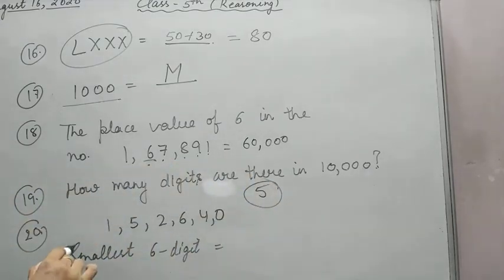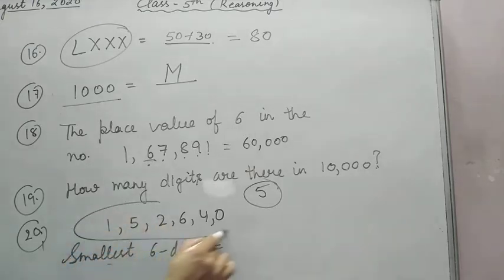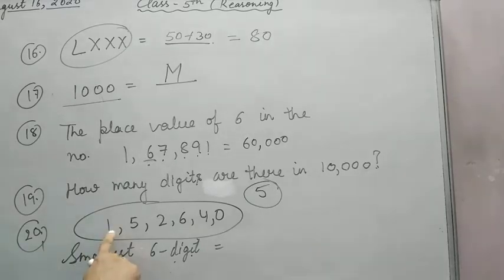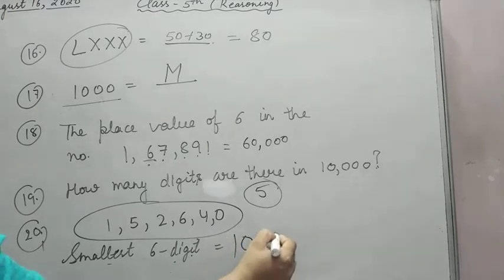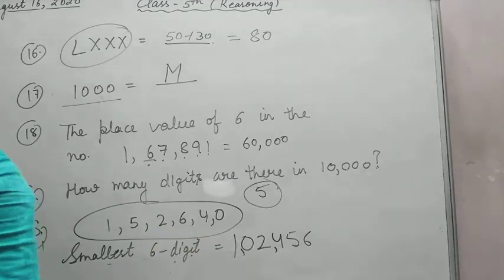Question 20: You have to make the smallest six-digit number by using these digits. The digits are given to you: 1, 5, 2, 6, 4, 0. You have to make the smallest number. Write down 1 first, then 0, 2, 4, 5, 6. So 1,02,456 is your smallest number.